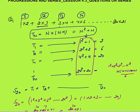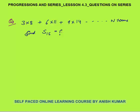In every such question, you first need to find the nth term, then add the terms to get your answer. Question 2 is 3×8 + 6×11 + 9×14 up to n terms. We need to find the sum of 15 terms. First, find the nth term.